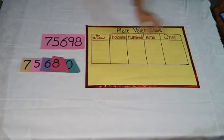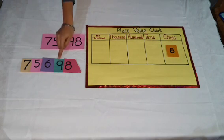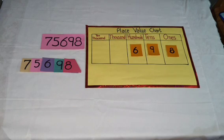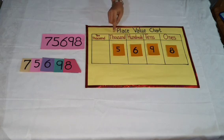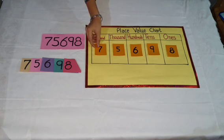Now, looking at the ones place, we have 8. At the tens place, we have 9. At the hundreds place, we have 6. At the thousands place, we have 5. And at the ten-thousands place, we have 7.